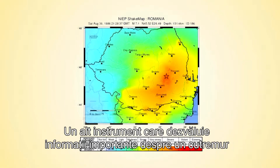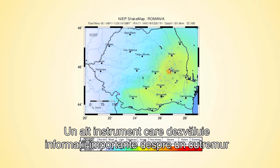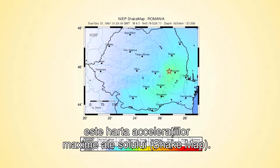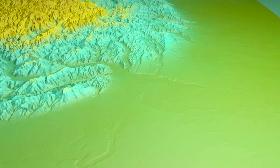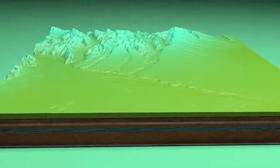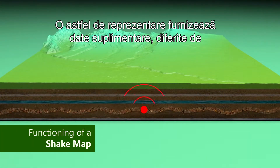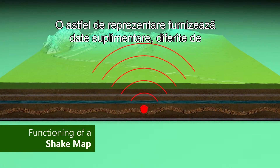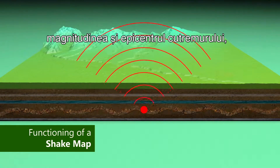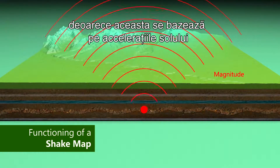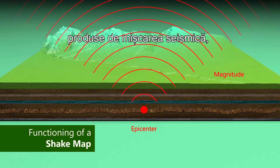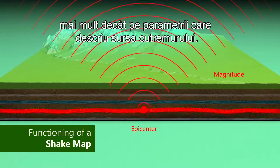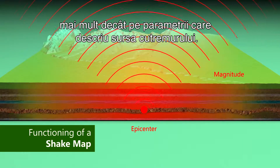Another tool which reveals important information about an earthquake is the shake map. A shake map provides further information different from the earthquake's magnitude and epicenter, since this map focuses on the ground shaking produced by the earthquake, rather than the parameters describing the earthquake's source.